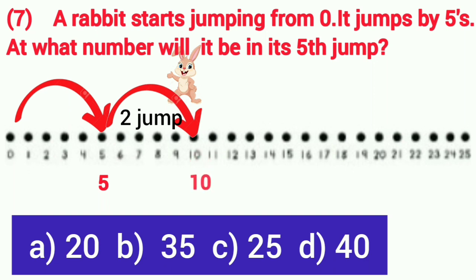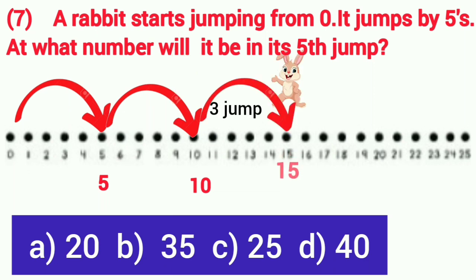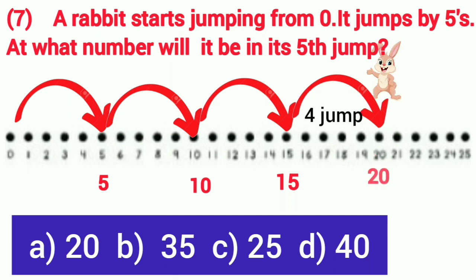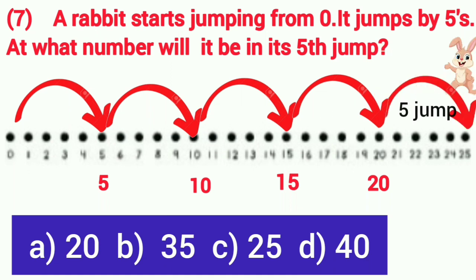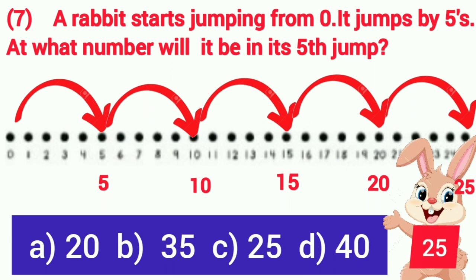From 10, it will take its third jump and will reach on 15. From 15, rabbit will again jump and in his fourth jump, it will reach on 20. From 20, it will take one more jump and will reach on 25. In this way, a rabbit will reach on 25 in its 5th jump.